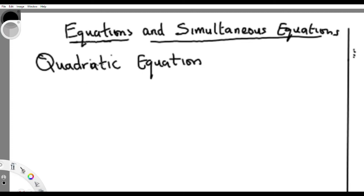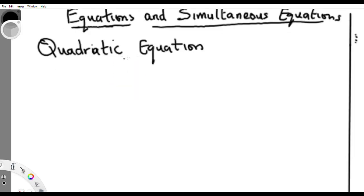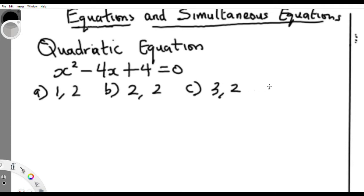And this video will be a short one, very short one. Now, for quadratic equation, a very good example is x² - 4x + 4 = 0. And you have your options to be a) 1,2, b) 2,2, c) 3,2, d) -2,1.